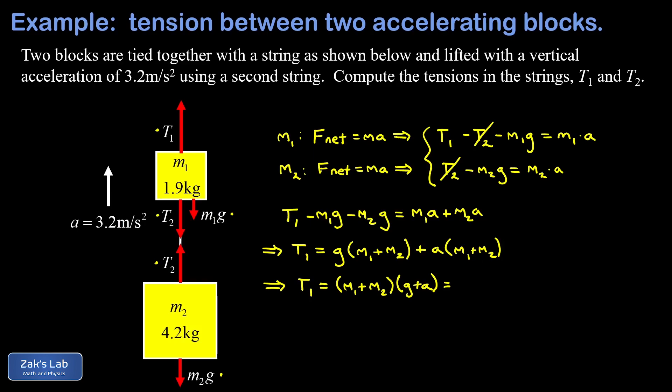Now we can substitute our numbers to get the actual numerical value of T1. T1 equals 1.9 kilograms plus 4.2 kilograms, multiplying 9.8 meters per second squared plus 3.2 meters per second squared. When we run the numbers, to three significant digits we get 79.3 newtons.